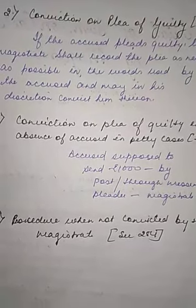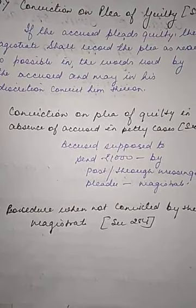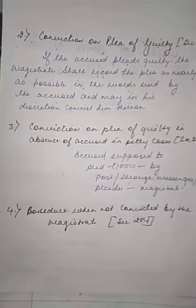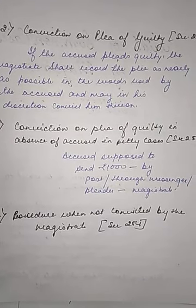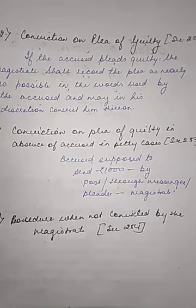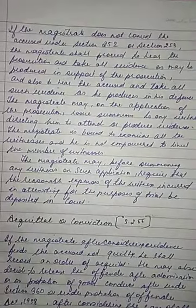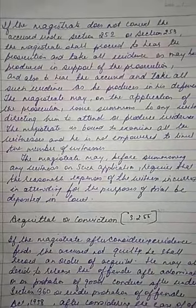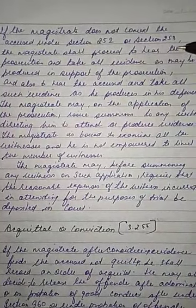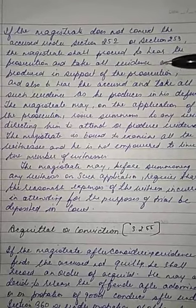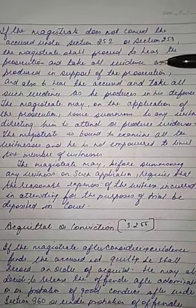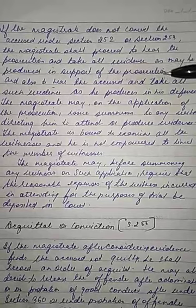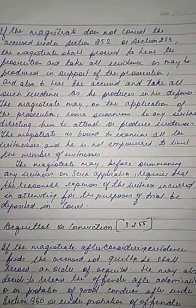The fourth step is: procedure when not convicted by the magistrate, under Section 254. If the magistrate does not convict the accused under Section 252 or Section 253, the magistrate shall proceed to hear the prosecution and take all evidence as may be produced in support of the prosecution, and also hear the accused and take such evidence as he produces in his defense.